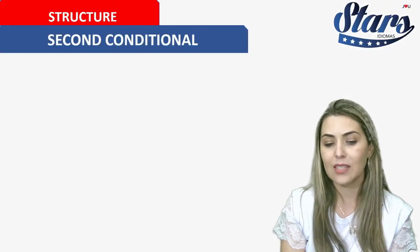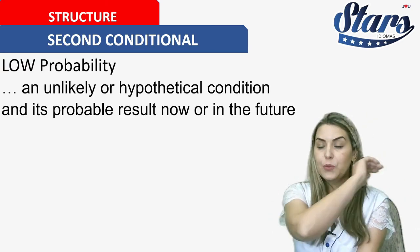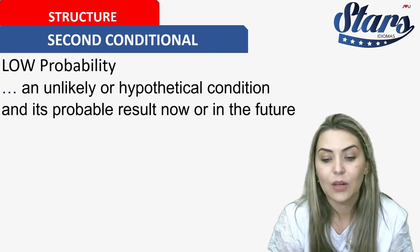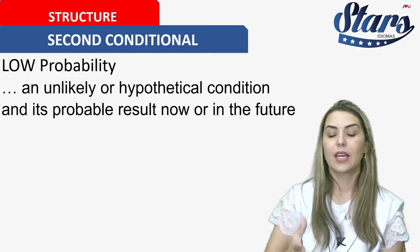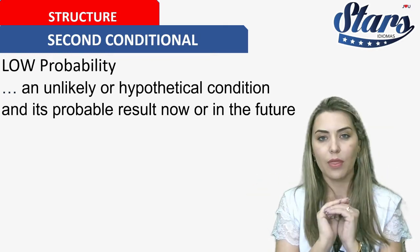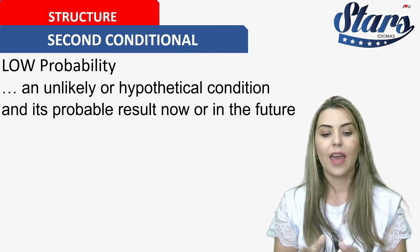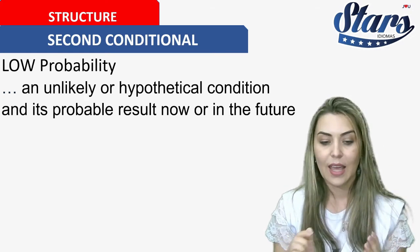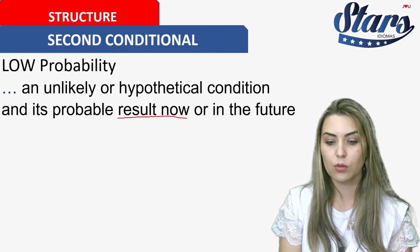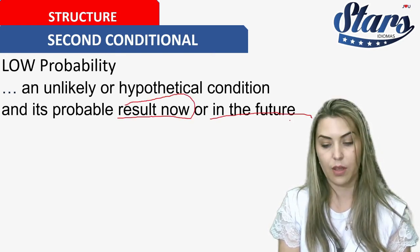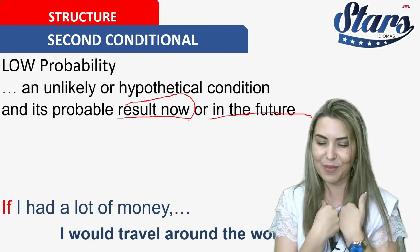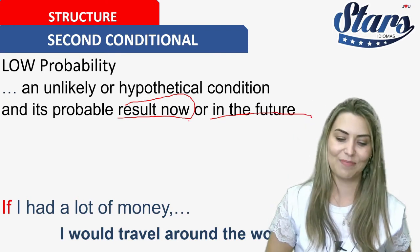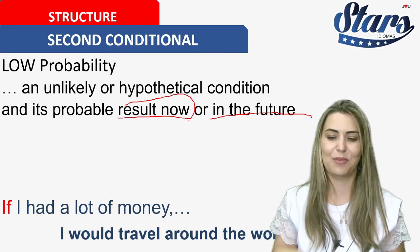Let's talk about the second conditional. Low probability — really low probability. An unlikely or hypothetical conditional, and it's probably resolved now or in the future. For example: if I had a lot of money, I would travel around the world. Would you go with me? Let's get money to travel around the world and talk in English with everybody.